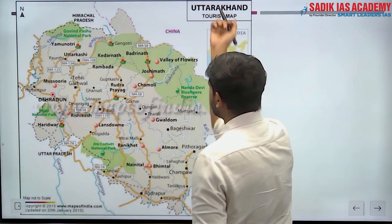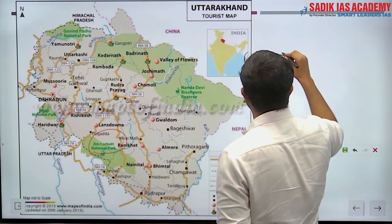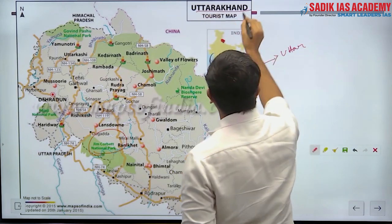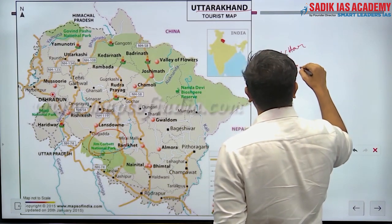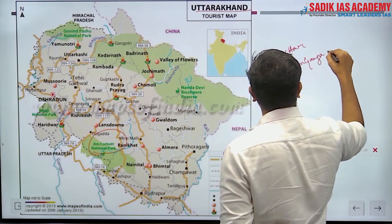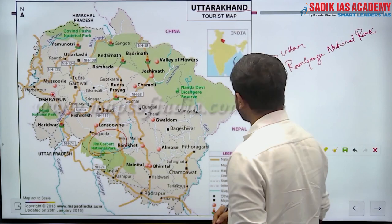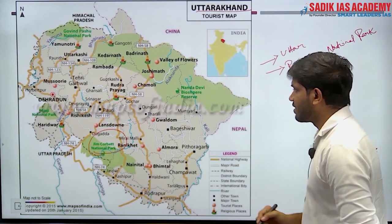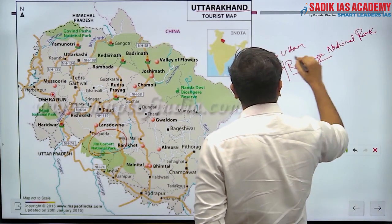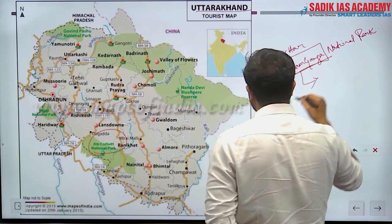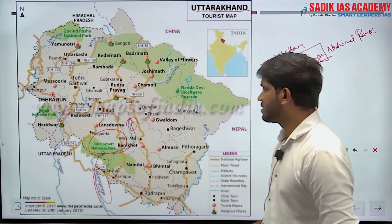Now we will see about Jim Corbett National Park, which is situated in Uttarakhand. It is also called Ram Ganga National Park — there is a proposal to rename it Ram Ganga. The river Ram Ganga flows inside this national park.